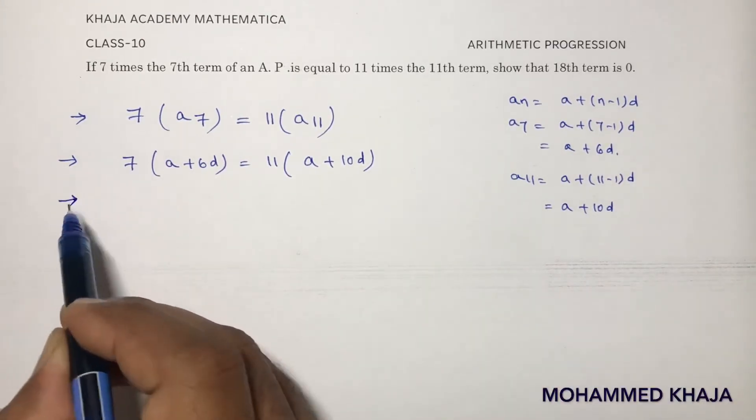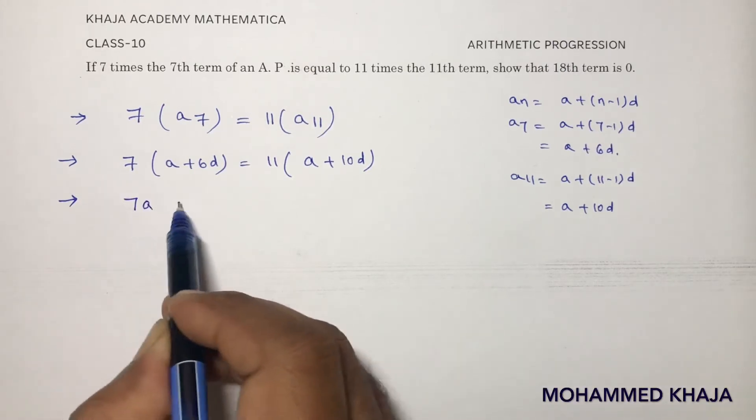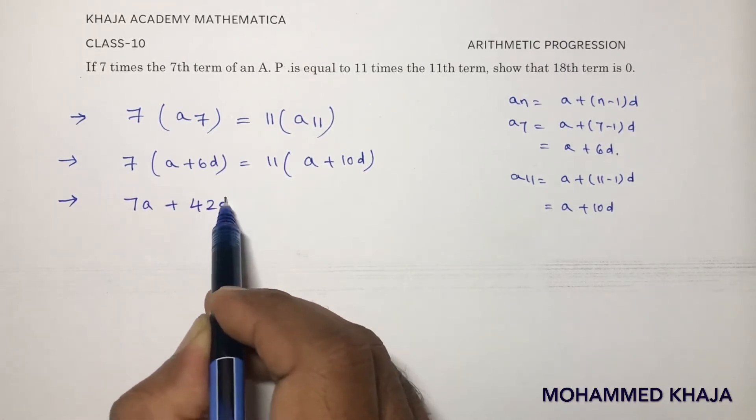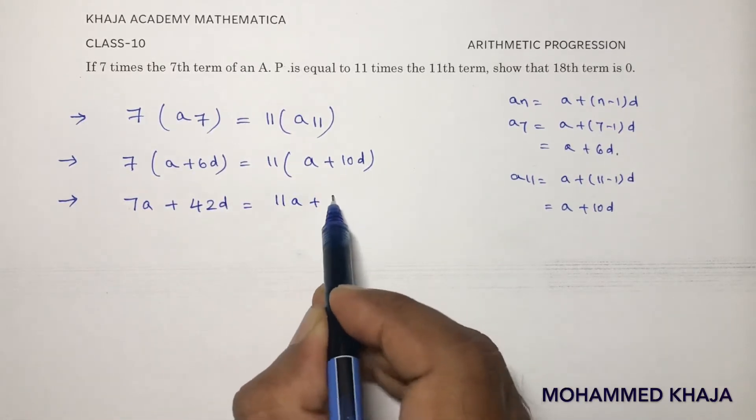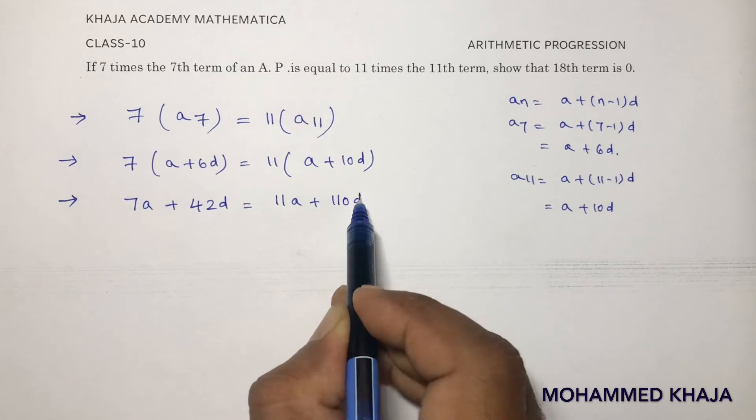So now if I will simplify this, 7 times a is 7a, 7 times 6 is 42d. 11 times a is 11a, 11 times 10 is 110d.